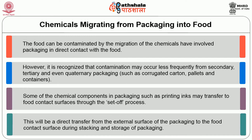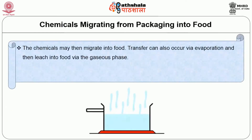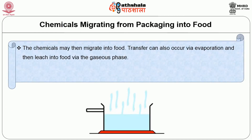This will be a direct transfer from the external surface of the packaging to the food contact surface during stacking and storage of the packaging. The chemicals may then migrate into food. Transfer can also occur via evaporation and then leach into food via gaseous space.